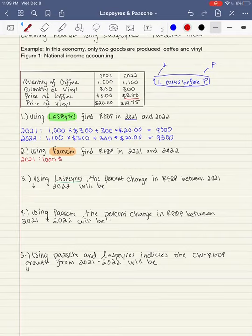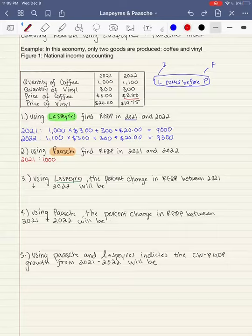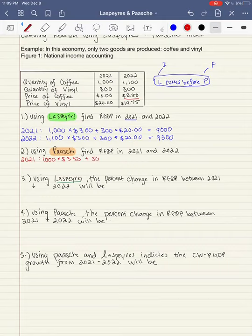So in 2021, we have the quantity of 1000. That is true. But now we're multiplying this by the prices in 2022. So $3.50 plus the quantity of vinyl in 2021, which is 300, times the price of vinyl in 2022. It's a little different. Okay.